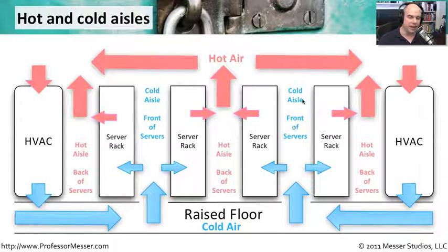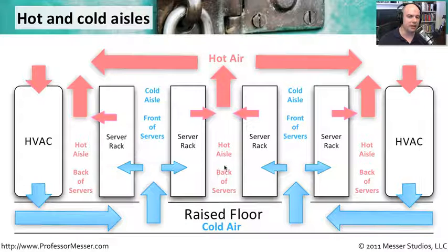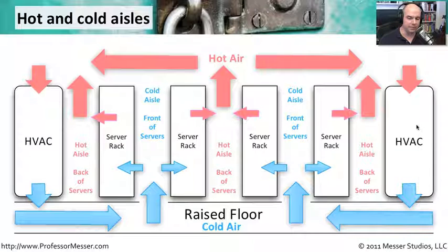On the other side of the rack is the back of the server, where all the hot air is coming out. So back-to-back aisles are our hot aisles — that's where all the hot air is coming out. It rises to the top of the building where it will then be pulled back down through our air conditioning systems, cooled again, and sent back through the raised floor.